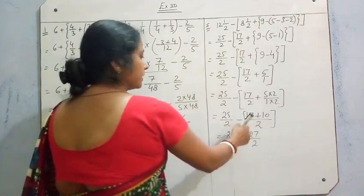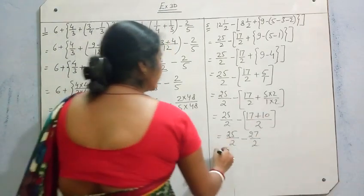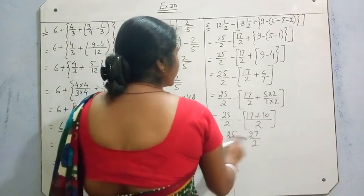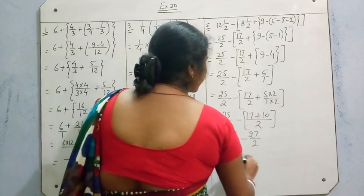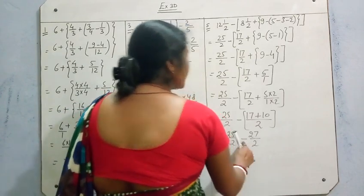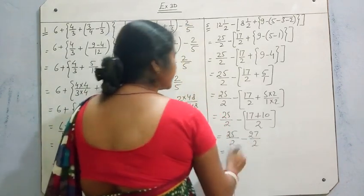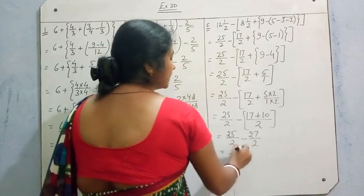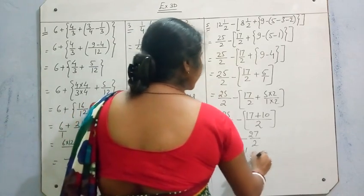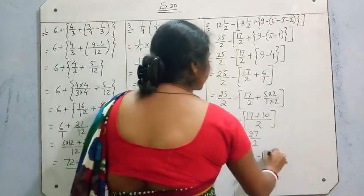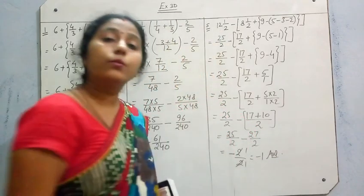Square bracket is removed. Now plus minus gives minus — so 27 minus 25 is 2 by 2. The sign will be negative since 27 is greater than 25. Cancel: 2 ones are 2 and 2 ones are 2, giving minus 1. So the answer is minus 1.